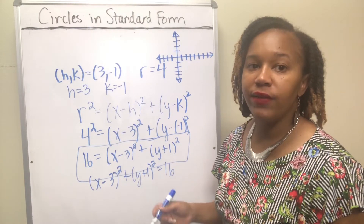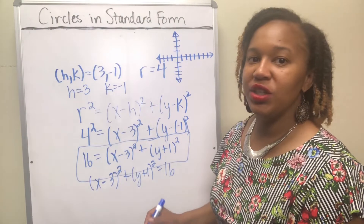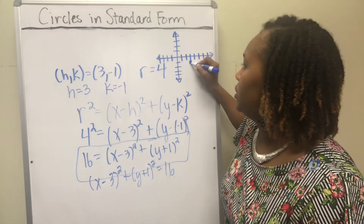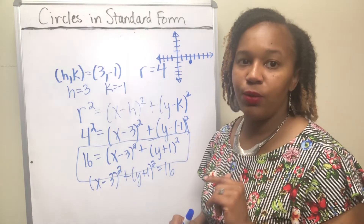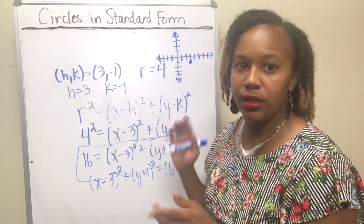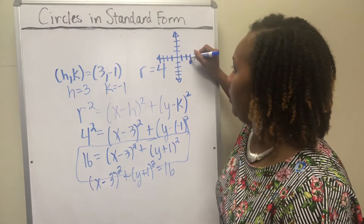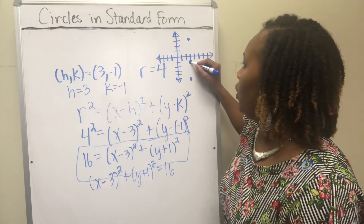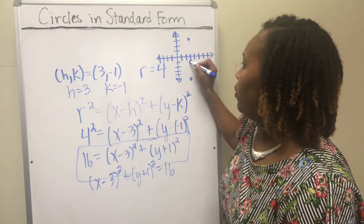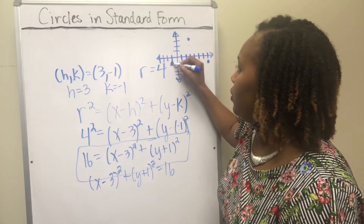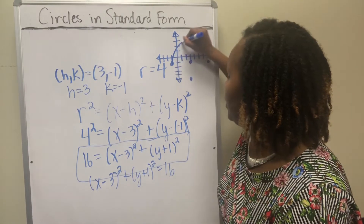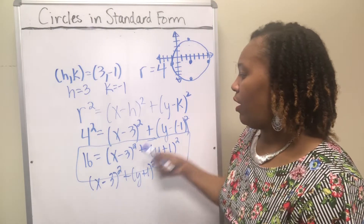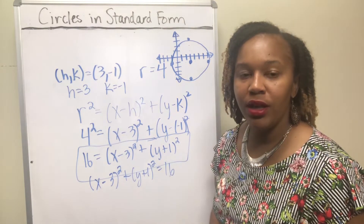To graph this equation, start by plotting the center at (3, negative 1). Then go the distance of the radius — which is 4 — up, down, right, and left from the center to get four points on the circle. Going up 4, down 4, right 4, and left 4 gives four points. Then connect them to draw the circle. The center is (3, negative 1) and the radius is 4.